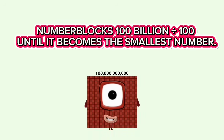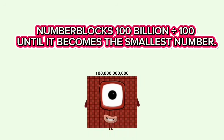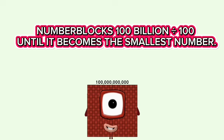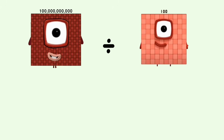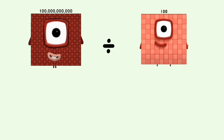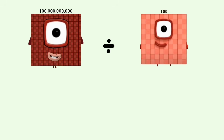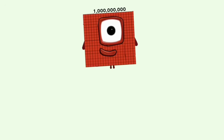Number Blocks: 100 billion divided by 100, until it becomes the smallest number. 100 billion divided by 100 equals 1 billion.